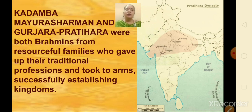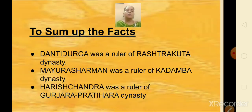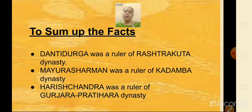They gave up their traditional professions and took to arms, successfully establishing kingdoms in Karnataka and Rajasthan respectively. In the adjoining figure, the area shown in light pink colour represents the rule of Kadamba Mayura Sharman and Gurjara Pratiharas. To summarize: Dantidurga was the ruler of the Rastrakutta dynasty; Mayura Sharman was the ruler of the Kadamba dynasty; and Harishchandra was the ruler of the Gurjara Pratihara dynasty.